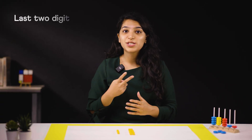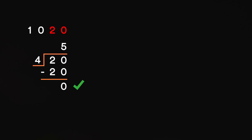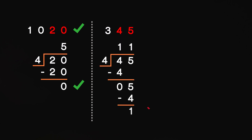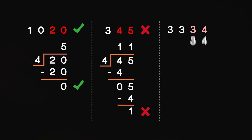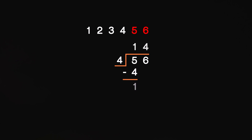Again, we see that just the last two digits can determine the divisibility by 4. Let's apply this rule for a few more numbers. 1020: the last two digits form 20, which is divisible by 4, so 1020 is divisible by 4. 345: the last two digits form 45, which is not divisible by 4, so 345 is not divisible by 4. How about 123456? 56 is divisible by 4, so 123456 is divisible by 4. That's how just the last two digits can determine the divisibility by 4.